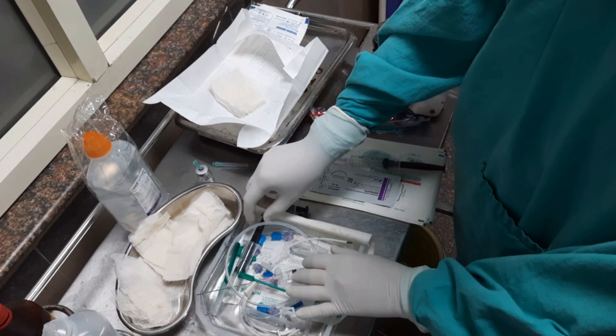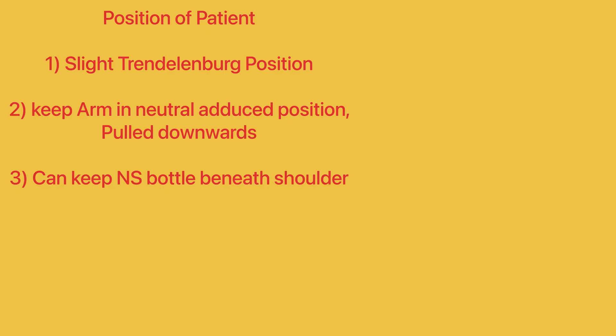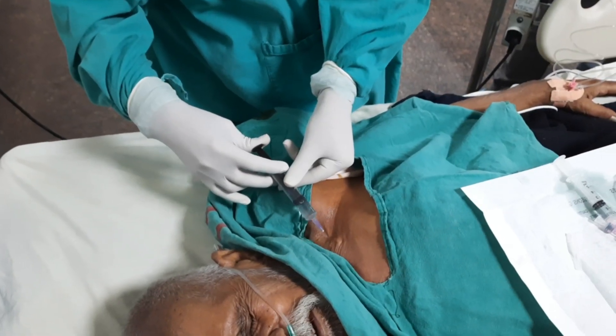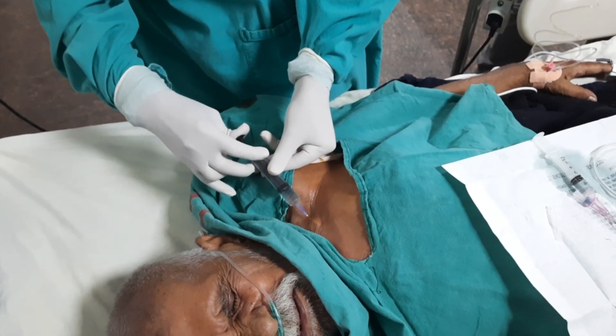We have to keep the patient in a slight Trendelenburg position to keep the central vein prominent. Keep that arm in a neutral, adducted position, pulled slightly downwards. Sometimes we can keep one NS bottle beneath the shoulder on the side we are inserting the central line. We have to sterilize the area with spirit and povidone iodine. We have to use all barrier methods — gown, cap, mask, gloves — to prevent catheter-related bloodstream infection.